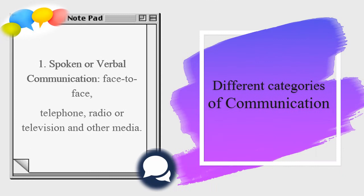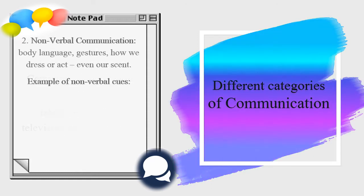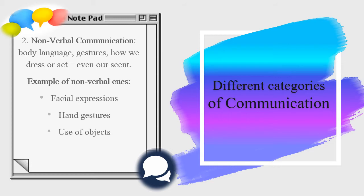We have different categories of communication. The first is spoken or verbal communication, which we are always using in our daily life. The second is non-verbal communication, where we use body language and gestures to interact with others. Examples of this are facial expressions, hand gestures, use of objects, and body movement.